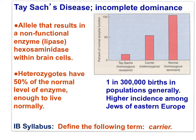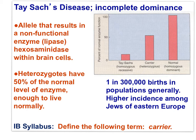The heterozygote with Tay-Sachs is a healthy person, just like the homozygous normal person. Thus the Tay-Sachs allele appears recessive to the normal enzyme allele. But upon close examination of a heterozygote cell, the phenotype is intermediate — that's incomplete dominance. On the surface, Tay-Sachs appears dominant recessive, as both homozygous normal and heterozygous genotypes have the same phenotypic expression. But at the cell level, the heterozygous carrier produces only half as much enzyme as the homozygous normal individual.